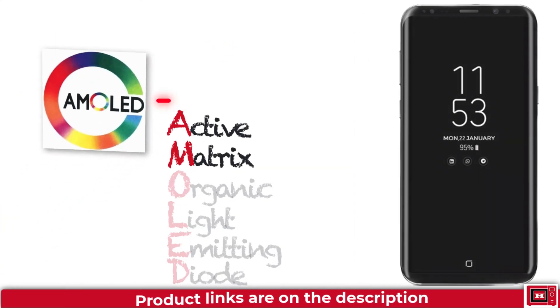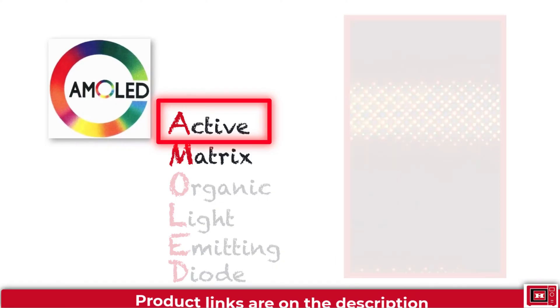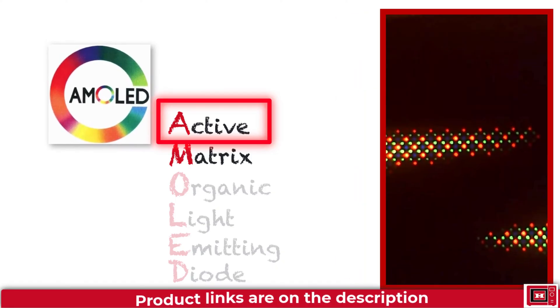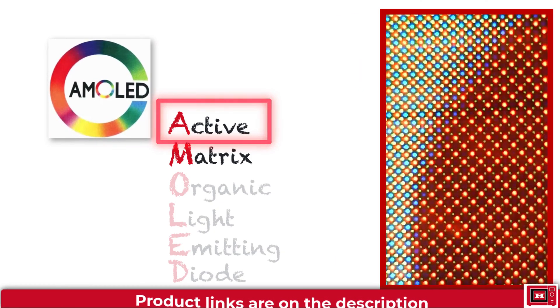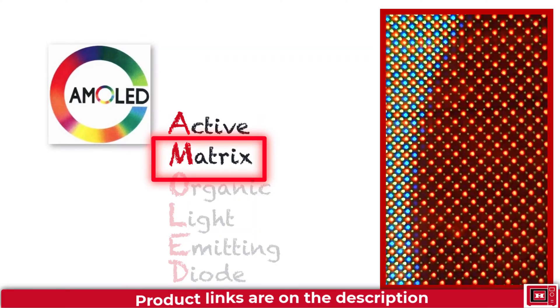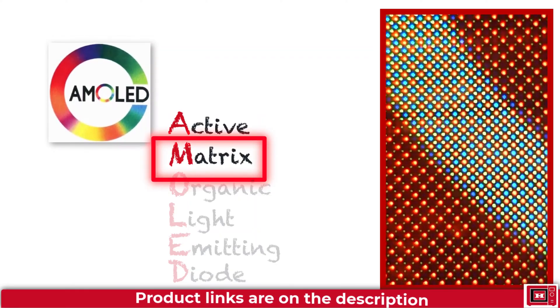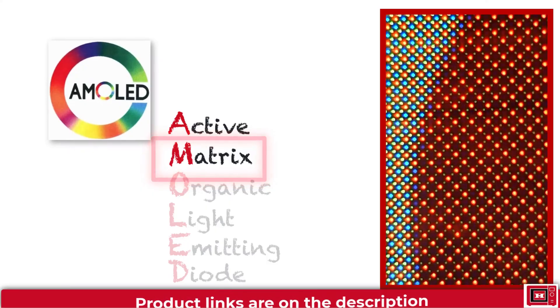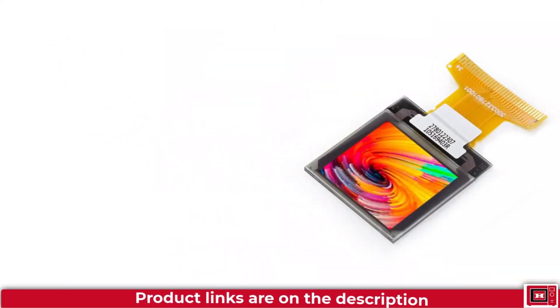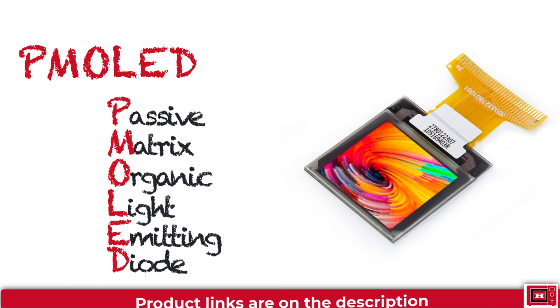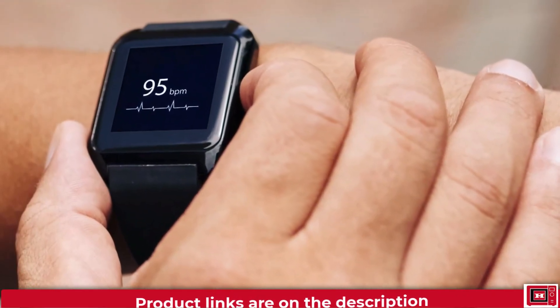Active simply tells you the speed at which the TFT or switches can turn the pixels on and off is really fast. Matrix is a concept telling you each grid of pixel has its individual TFT or switch. On the flip side would be PM OLED which is passive matrix OLED, usually found on smaller, simpler displays in small devices.